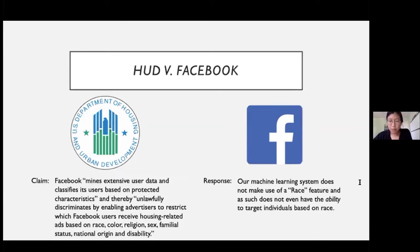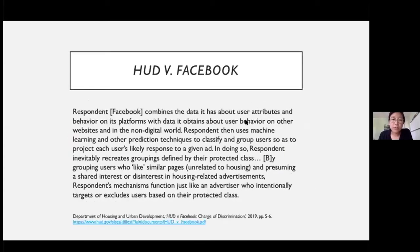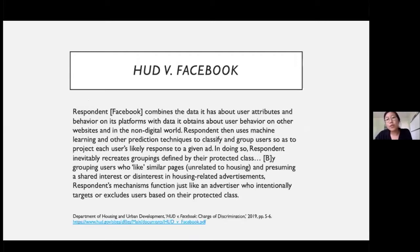Facebook responded to the complaint, pointing out that its machine learning system does not even make use of a race feature, so it doesn't have the ability to target individuals based on race. But this line was unconvincing. In March of the following year, HUD put forth an actual charge of discrimination. The charge states: Facebook combines the data it has about user attributes and behavior on its platform with data it obtains about user behavior on other websites and the non-digital world.